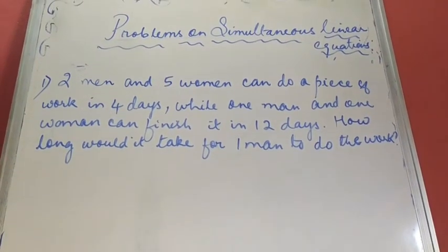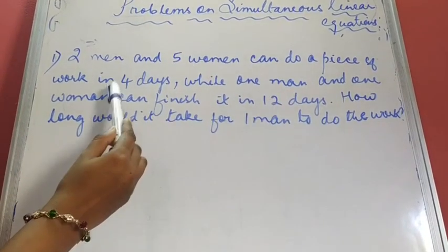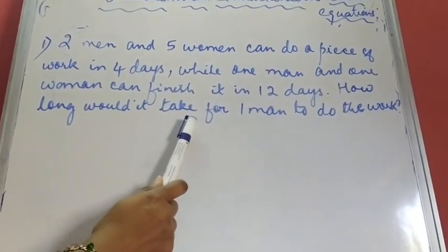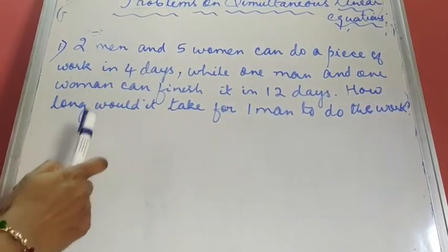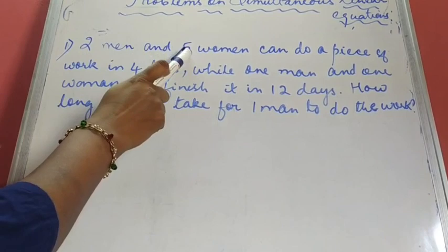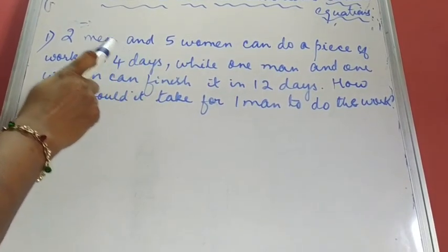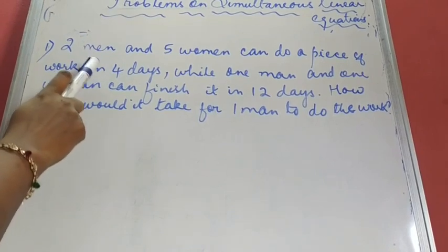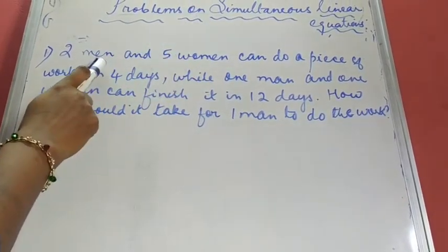The first question reads: two men and five women can do a piece of work in four days, while one man and one woman can finish it in 12 days. How long would it take for one man to do the work? Here we have two groups — men and women — with two men and five women completing the work in four days. When formulating the word equation, we translate it into x and y since we are solving linear equations.